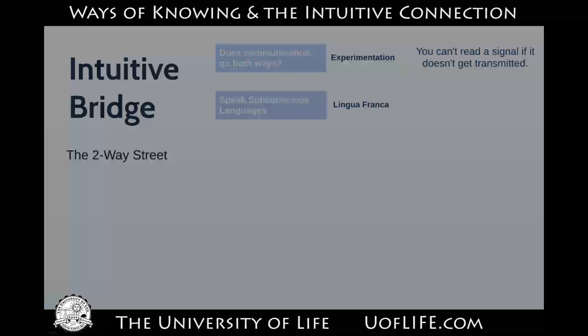To really learn to do this — to read other people and influence them — you need to learn to speak subconscious languages. You can't really control your subconscious directly, so you need something your conscious mind understands but your subconscious also does — a common language, a lingua franca. There are two of them: imagery — you can create any metaphor to represent feelings and concepts — and emotion. This really helps you get in touch with your subconscious and find out what's in there and influence it. Intuitive bridge is primarily about healing: if people have fears, stuck emotions, or limited thoughts, you can find those and influence them.